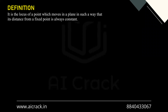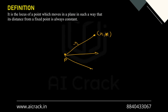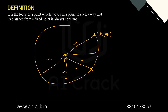A circle is the locus of a point which moves in a plane such that its distance from a fixed point is always constant. Let's say the fixed point is P, this distance is r, and the variable point is (h, k) in standard locus format. If we keep moving this point while keeping this distance equal, we get a circle — at all these points the distance from point P equals r, creating a trajectory called a circle.